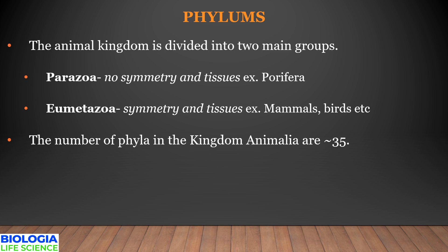The number of phyla in Kingdom Animalia ranges from 35 to 40. In the next video, we will be discussing the basis of classification of Kingdom Animalia into different phyla. Thank you.